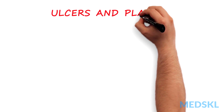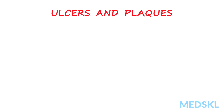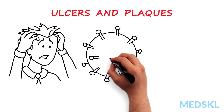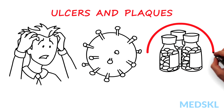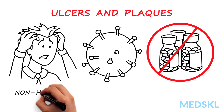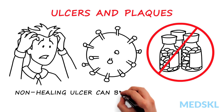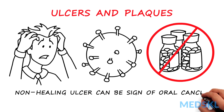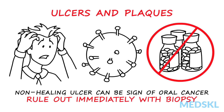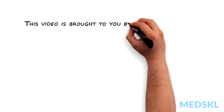Ulcers and plaques in the oral cavity can be cause for concern in some patients. These are often secondary to treatable conditions such as stress, infection, or vitamin deficiencies. Leukoplakia refers to white plaques in the oral cavity and erythroplakia refers to red plaques. Any non-healing ulcer or plaque, especially in patients who smoke or drink heavily, can be a sign of oral cancer and should be ruled out immediately with a biopsy.